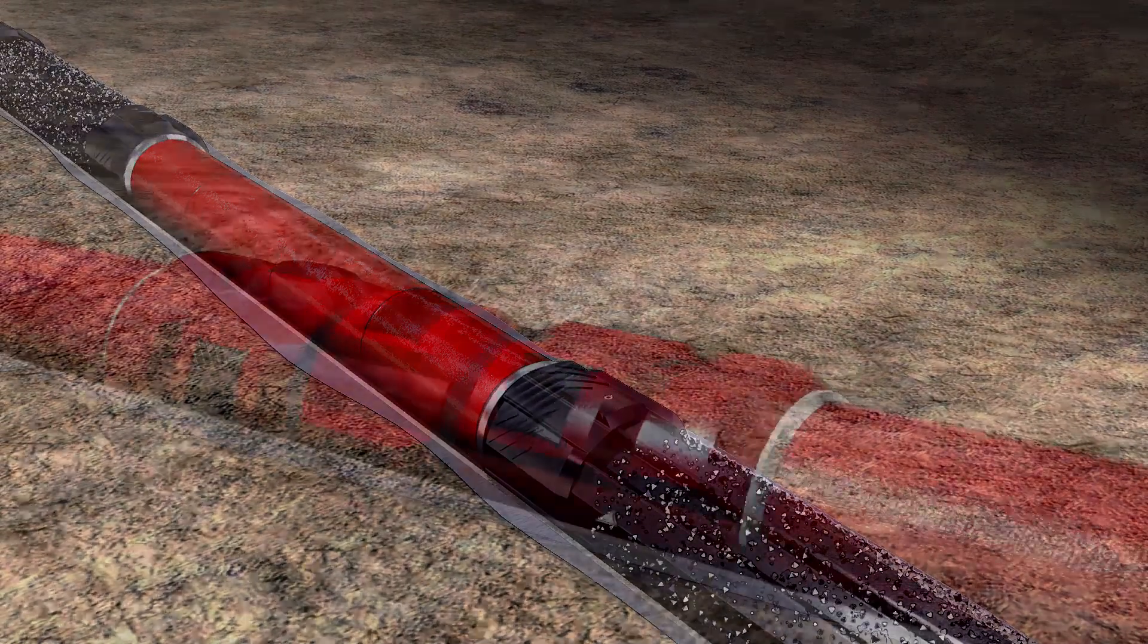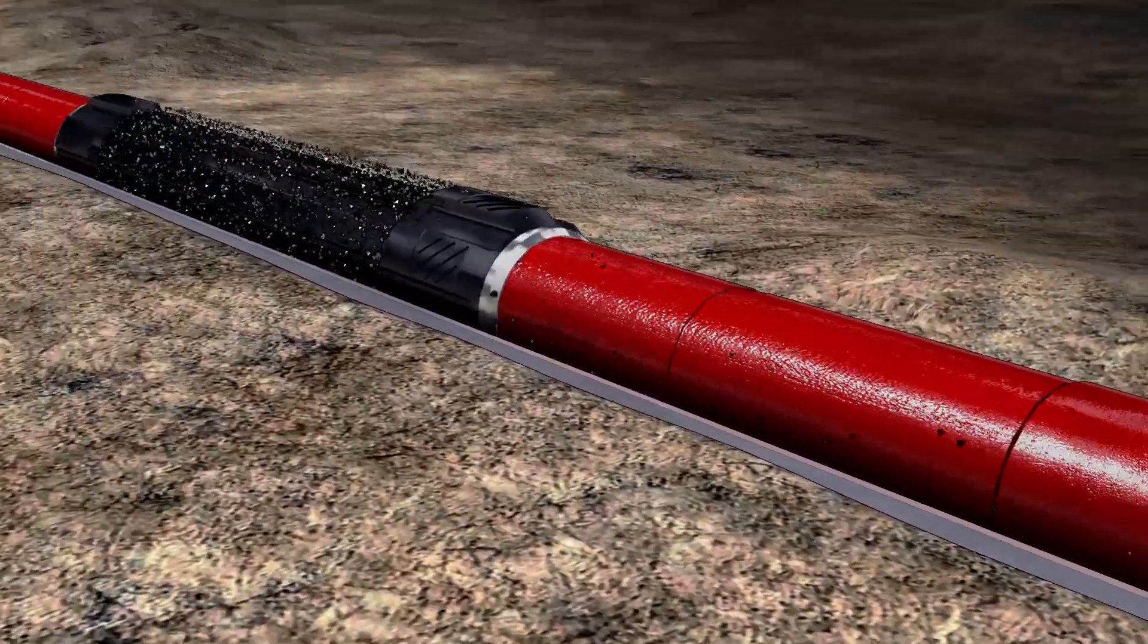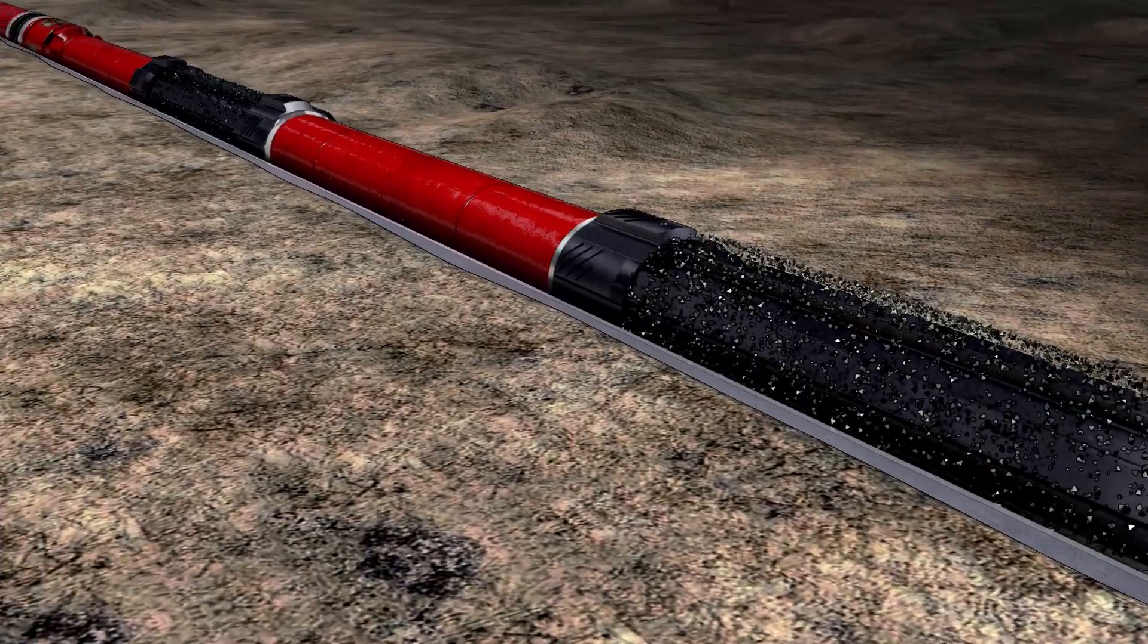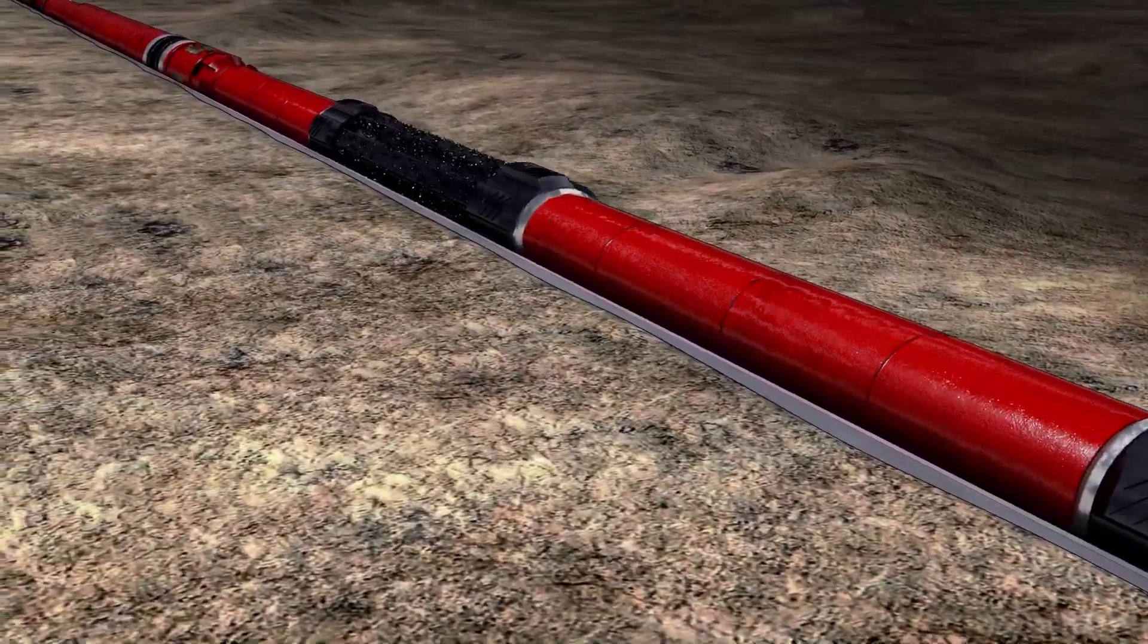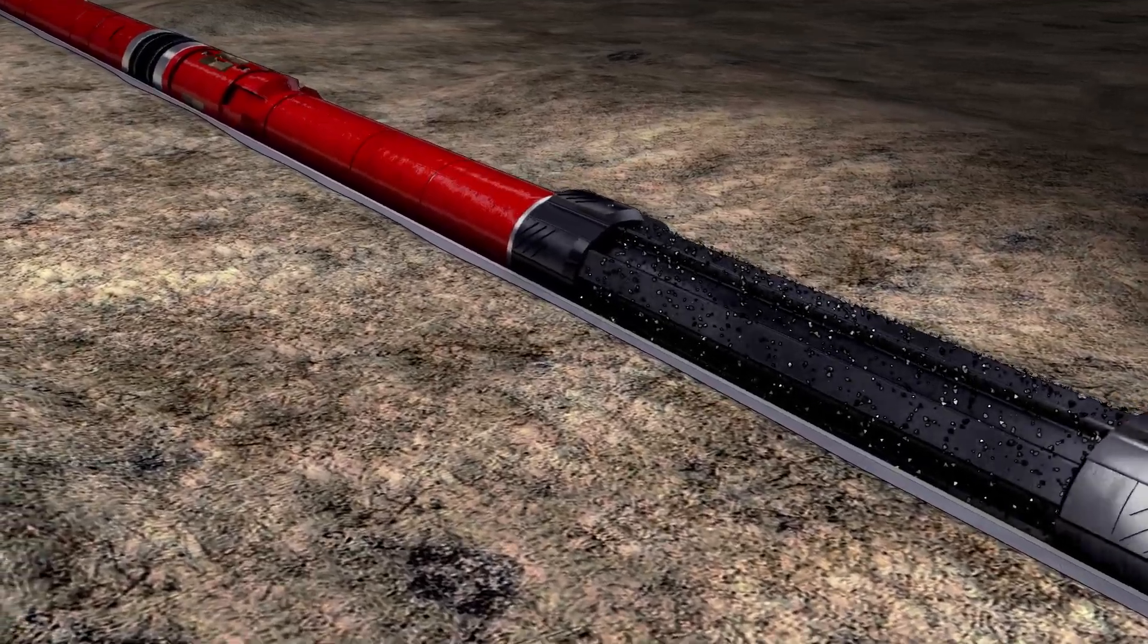The MaxForce heavy-duty string magnet removes ferrous debris from the wellbore fluid. Another Max Blade scraper is installed above the landing sub, followed by two more magnets to remove contaminants from the casing.